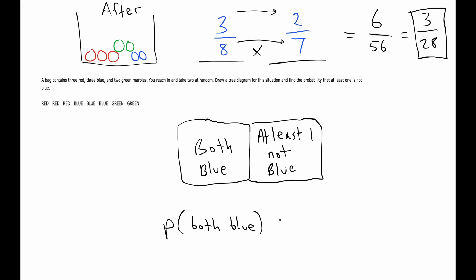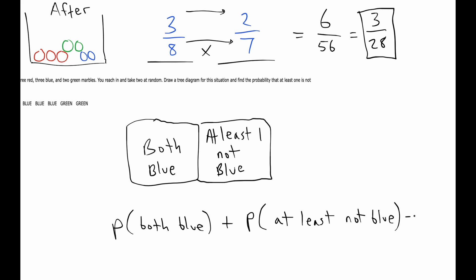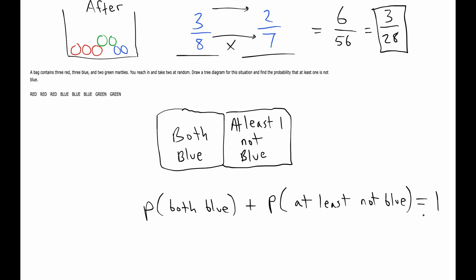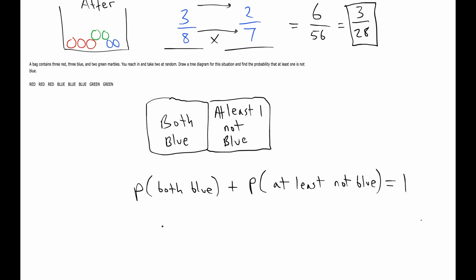So because they're complements, that means the probability of both of them being blue plus the probability of at least one not being blue, those two probabilities would have to add to one. So we can find our answer for this next one by saying the probability of at least one not blue is going to be one minus the probability that they're both blue.